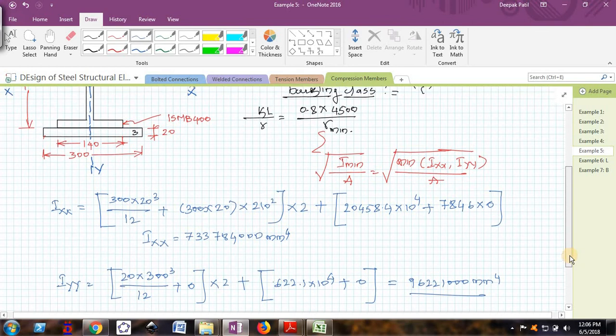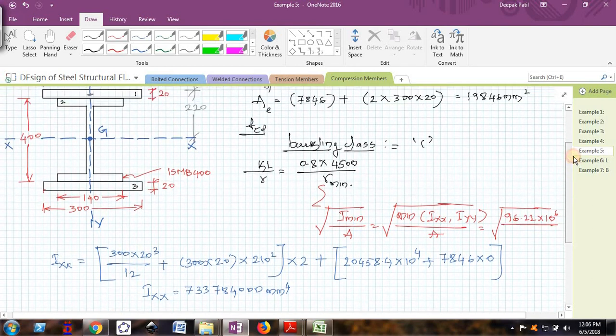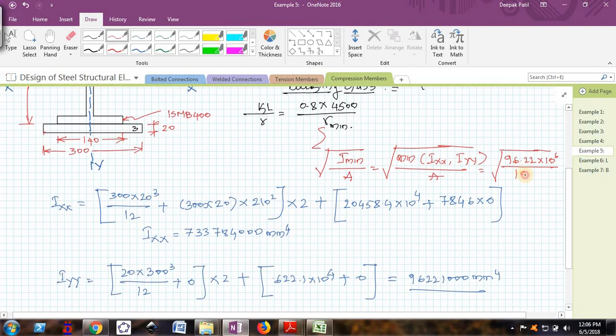It is 9622100, which is 96.22 × 10⁶, divided by the total area which is coming out to be 19846. R minimum I am getting 69.63 mm.